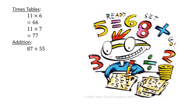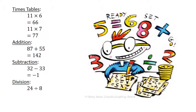Eighty-seven plus fifty-five equals one hundred and forty-two. Subtraction: thirty-two minus thirty-three equals negative one. Division: twenty-four divided by eight equals three.